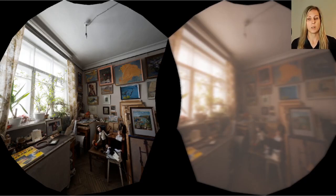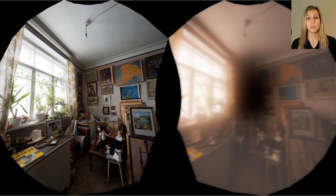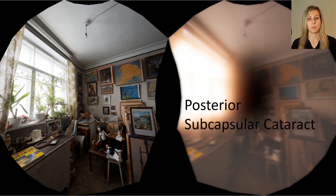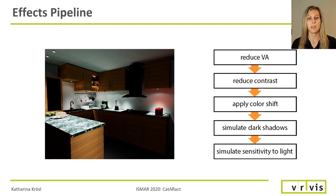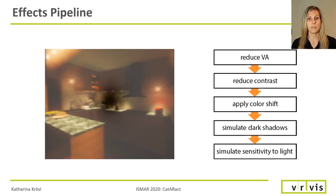We can also invert our shadow texture to create shadows in the center of the field of view, which is a common symptom of posterior subcapsular cataracts. Besides AR and 360 images, we can of course also use our simulation in VR, for example to test 3D models of architectural designs for accessibility.